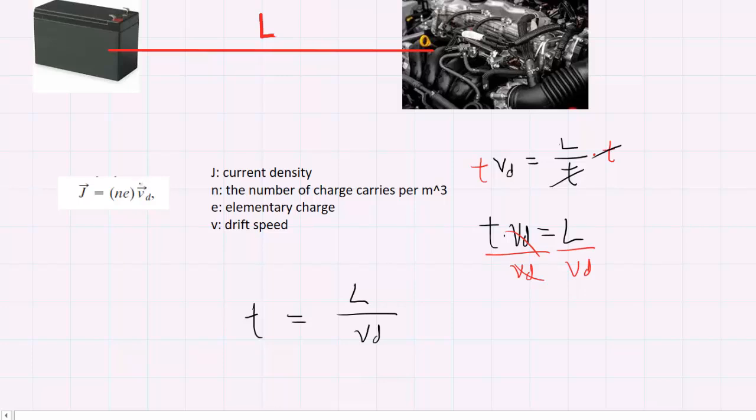The drift speed is related to the current density, as well as the number of charge carriers per unit volume times the elementary charge. This is the equation for current density that you learned in this chapter.